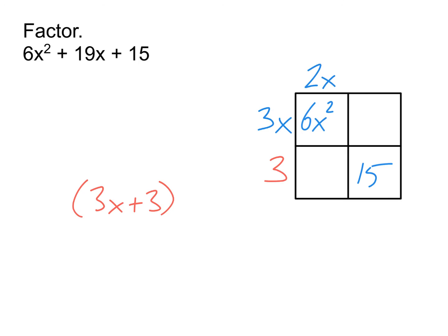So actually we can save ourselves a little bit of work knowing that can't happen just because the original, there was nothing I could factor out of that one. Okay, so then if I'm going to try 3 and 5, then I want to put the 3 over here and the 5 here.